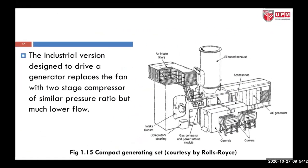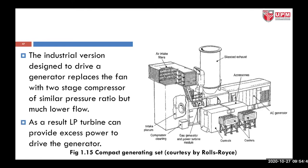The industrial version is designed to drive a generator and replaces the fan with a two-stage compressor. Imagine the gas turbine engine — the whole system is a huge building, and you cannot install this on any aircraft, as it is suitable only for land-based application. As a result, the low pressure turbine can provide excess power to drive the generator.